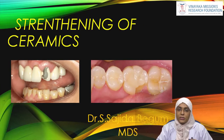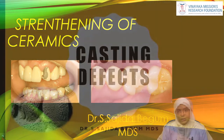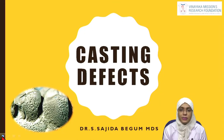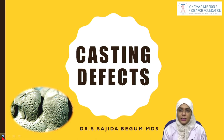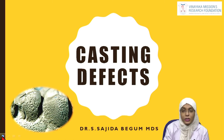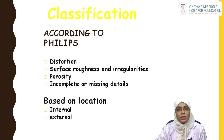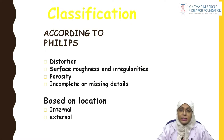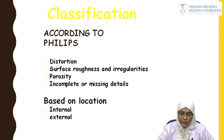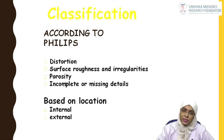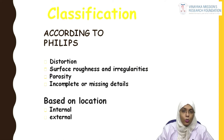With this we have completed the first concept — strengthening of ceramics. The second topic is casting defects. Any errors occurring in the casting procedure result in a defective casting, which we call casting defects. Using Phillips' classification, casting defects are classified into: distortion, surface roughness and irregularities, porosities, and incomplete or missing details. Based on location, defects can be internal or external. We will see each defect — why it occurs and how it can be prevented.